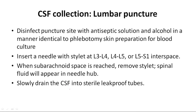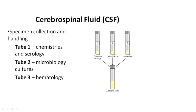Depending on the location of the spinal cord, when the subarachnoid space is reached, the stylet is removed and spinal fluid is allowed to drain by itself, appearing in the needle hub. The CSF is slowly drained into leak-proof tubes. Preferably, CSF should be collected in three different tubes: tube 1 for biochemical and serological investigation, tube 2 for microbiological culture, and tube 3 for hematological examination.